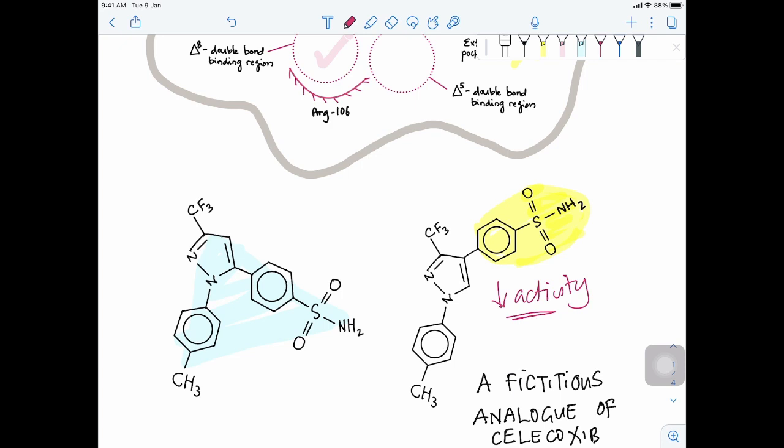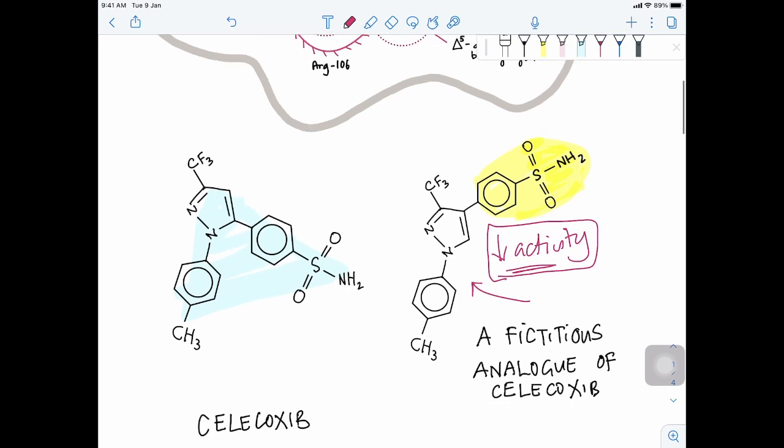Any analog or compounds, derivatives that don't match and are not able to interact with the binding site in COX-2 or even in any other enzyme or receptor interaction, you'd see a drop in activity or poor activity. Therefore, this molecule has a poor anti-inflammatory or painkiller action compared to celecoxib here.